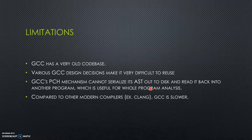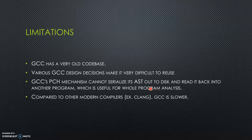Regarding limitations of GCC: it has a very old code base, and design decisions made in the past make it difficult to reuse and difficult to modify according to specific needs, although this has been done in embedded systems. GCC also uses the PCS mechanism, and the disadvantage is it cannot serialize the abstract syntax tree to disk and read it back — if it could, it would be able to analyze entire programs in a better way. Compared to other modern compilers like Clang, GCC is slower, less efficient, and consumes much more memory.